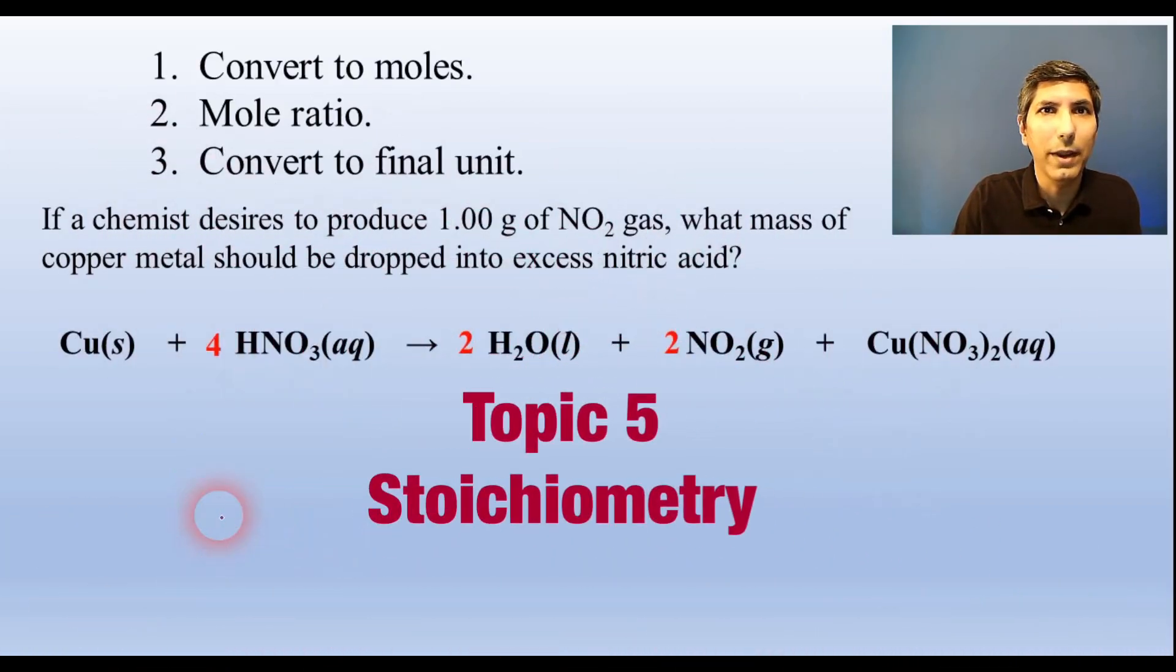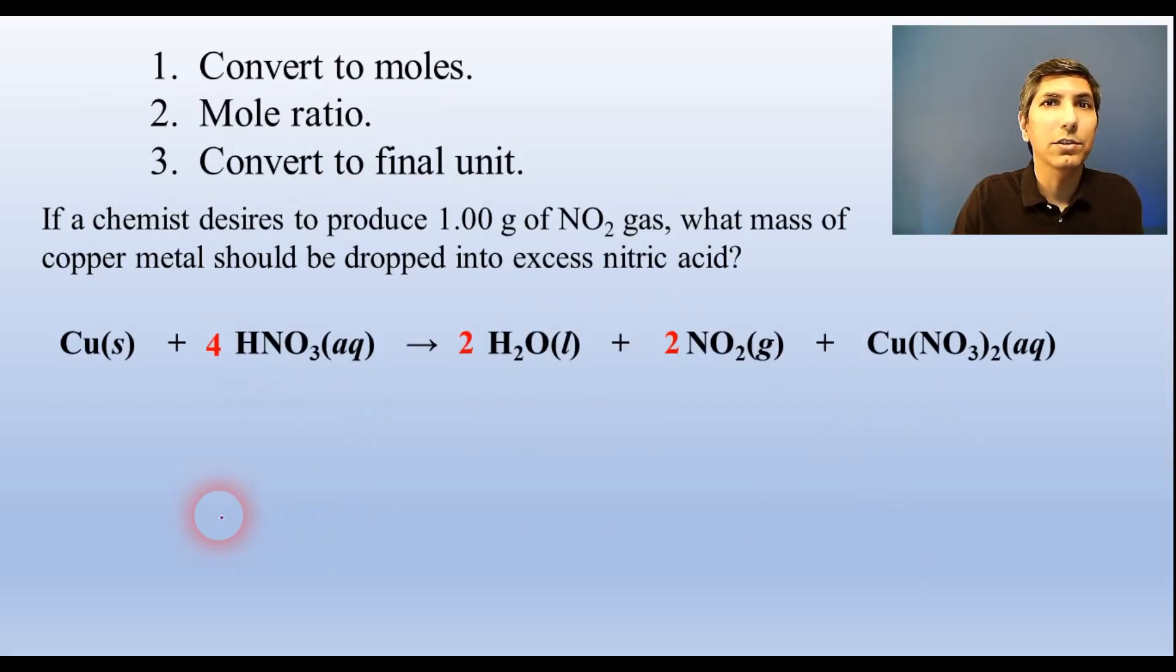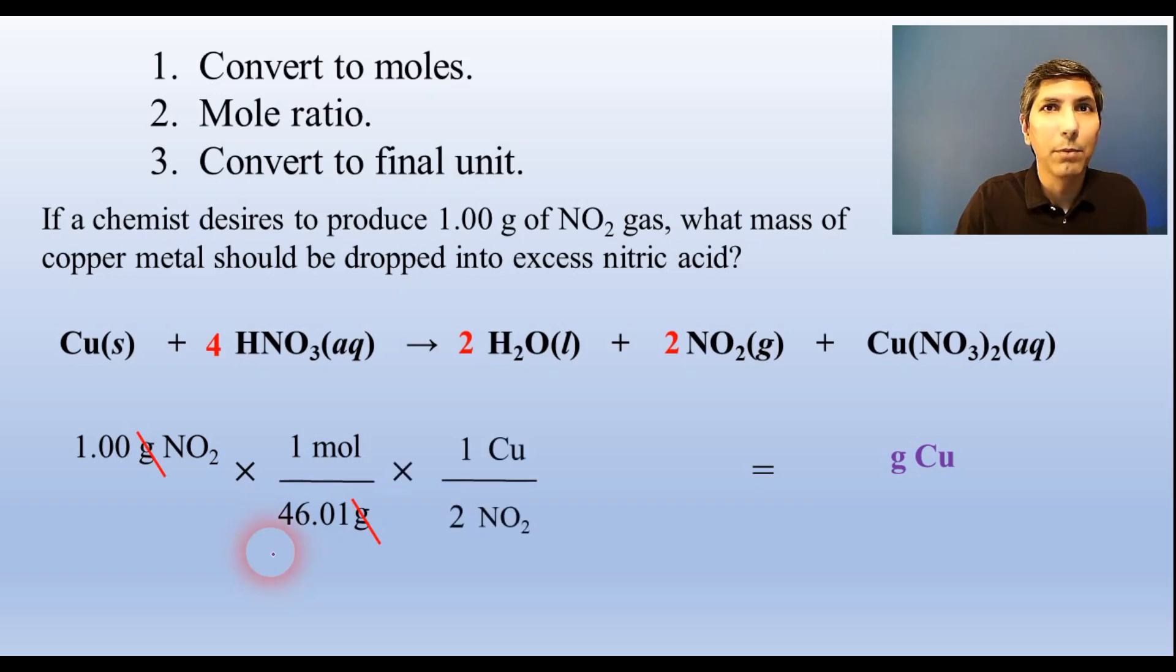We use balanced chemical equations as a recipe to calculate how much product can be made from a certain amount of a reactant, or vice versa. In this problem, we're trying to produce one gram of nitrogen dioxide. So we write that down, and we go through what I call a three-step process to convert to grams of copper in this case. Step one is to convert to moles. Step two is to use a mole ratio. The numbers for that mole ratio come from the coefficients of the balanced equation for the substances we're working with. Then step three is to convert to our final unit, which is grams in this case.